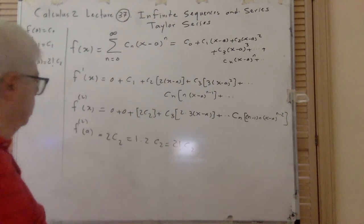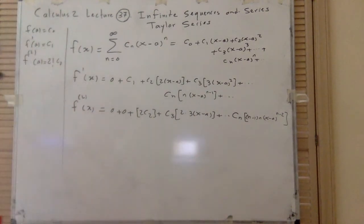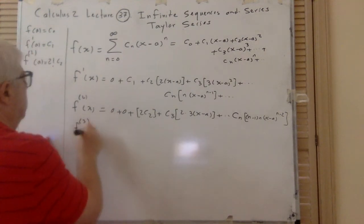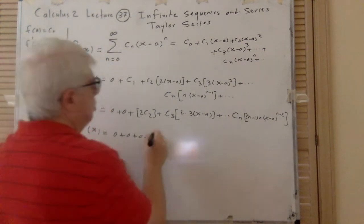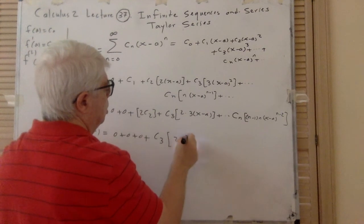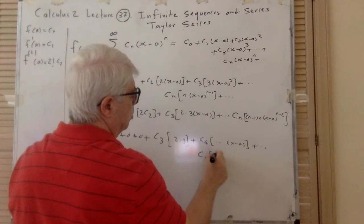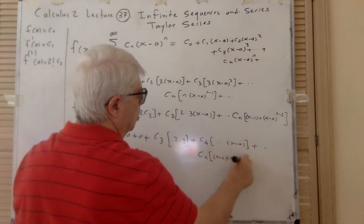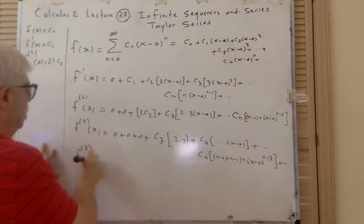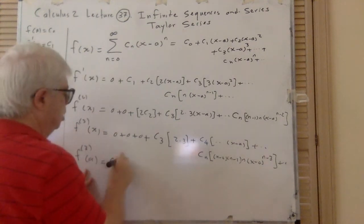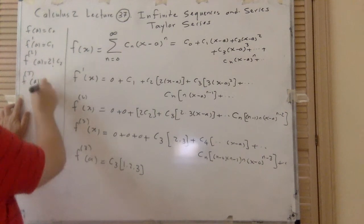Let's find C_3 and then you can guess what the trend is. F^(3)(x): here I have C_3 times 2 times 3, plus C_4 times something which has (x minus A), and every one of them after that has (x minus A). So F^(3) at A is simply C_3 times 1 times 2 times 3. I can say that F^(3)(A) = 3! · C_3.